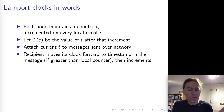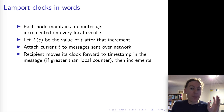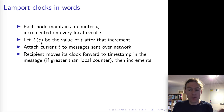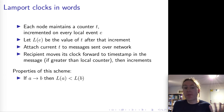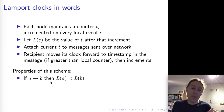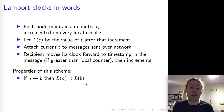Every node has a counter t, and we associate a particular value of t with every event. For every local event, we increment the counter, take the value after incrementing, and call that L(e) — the Lamport clock of event e. We attach those values to messages sent over the network. Lamport clocks have nice properties: if event a happened before event b, this scheme guarantees that the Lamport timestamp of a is strictly less than the Lamport timestamp of b. There's an exercise in the lecture notes asking you to prove this.